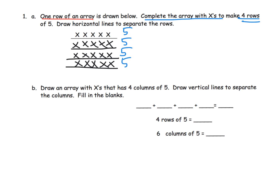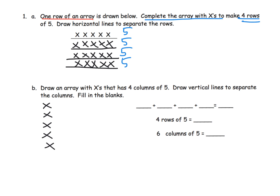Now down here, that's your Eureka Math bonus. We didn't have to do that up there, but down here it says draw an array with X's that has four columns of five. So the idea is we're supposed to have a column with five X's — one, two, three, four, five — there is our column of five, and we're supposed to create four columns.